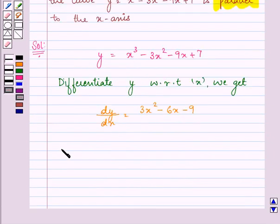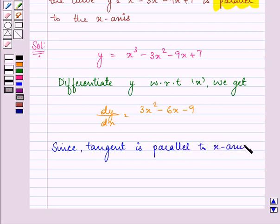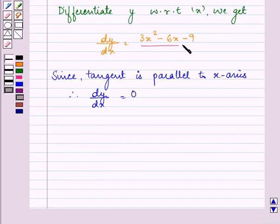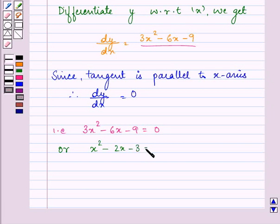Now we are given that the tangent is parallel to x-axis, so this means that dy by dx should be equal to 0. We have the value of dy by dx as 3x squared minus 6x minus 9, so it will be equal to 0.